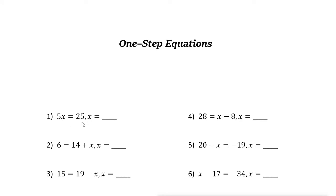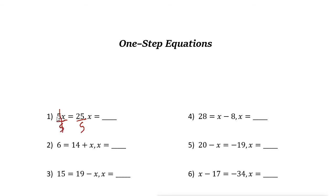The first one: 5x = 25. So 5 times a number equals 25, and we need to find the value of x. To solve the equation, we use the inverse operation. Since we have multiplication here, we need to divide — dividing both sides. 5x divided by 5 gives us x, and 25 divided by 5 is 5. So x = 5.